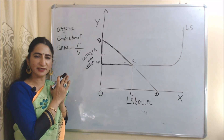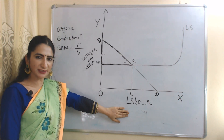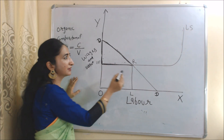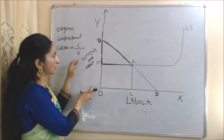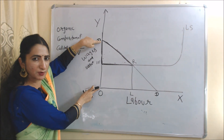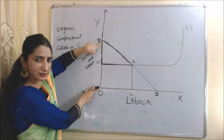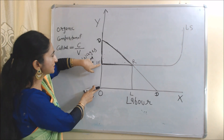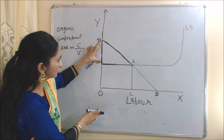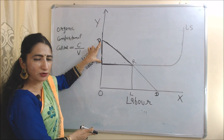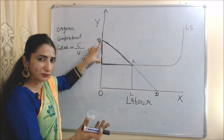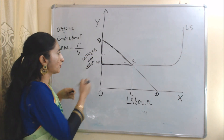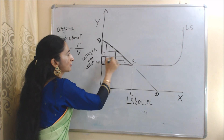Now we will understand this theory with the help of a diagram. On the x-axis we have labor, and on the y-axis we have wages and output. DD is the demand curve of labor, and LS is the supply curve of labor. OD is the value of output produced by labor, and OW is the wages paid to them. The difference between OD and OW equals DW — this difference is the surplus value, or the profit of the capitalist.